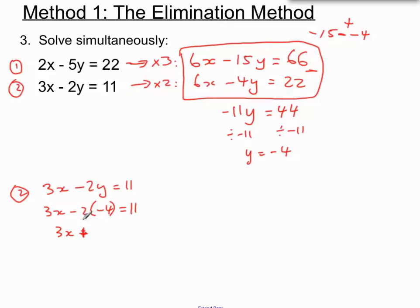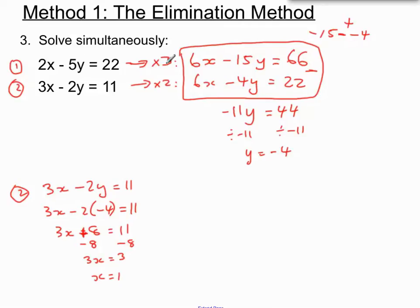Minus 2 times minus 4 is plus 8. So 3x plus 8 equals 11. We want to move the plus 8 by minusing 8 from both sides, leaving us with 3x equals 3, and x equals 1. So we had to adjust both equations to get the x's matching up, then merged them carefully. x ended up being 1 and y ended up being minus 4.